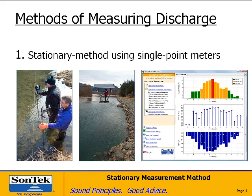Let's begin with the basics. On the left part of the picture, we have two stream gaugers performing a wading measurement using the stationary method with a single point current meter. This is a very traditional technique that's been around for well over 100 years. In the center, stream gaugers are up on a cableway with a Price double-A current meter below. On the far right is a data display from our Sontag Flow Tracker, a single point meter using the stationary method to calculate discharge.